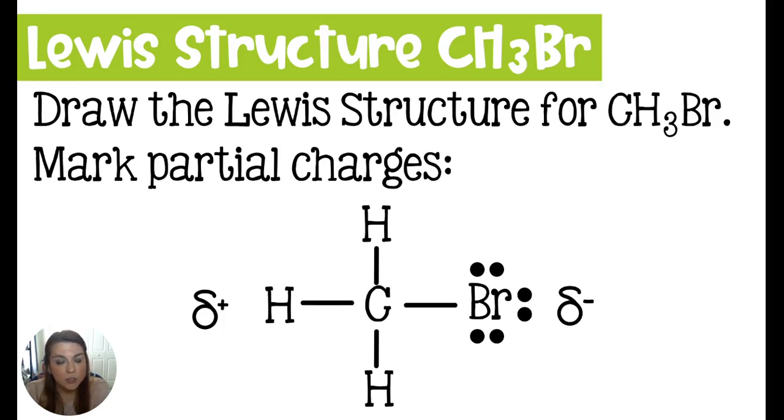And the bromine is going to be the negative atom or region of this molecule because it has three lone pairs and it's the most electronegative of all of the elements in this compound. And then opposite the bromine is going to be the positive hydrogen.